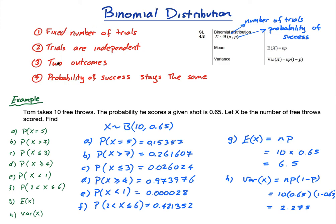Remember these four properties needed to use the binomial distribution. Often they won't tell you it's binomial — the key way to recognize it is the 'two': some kind of experiment with two outcomes, either he scores or he doesn't, either he wins or he loses, either it's green or it's blue. Two outcomes. See you in the next lesson.